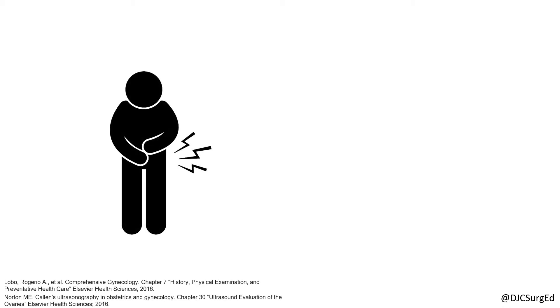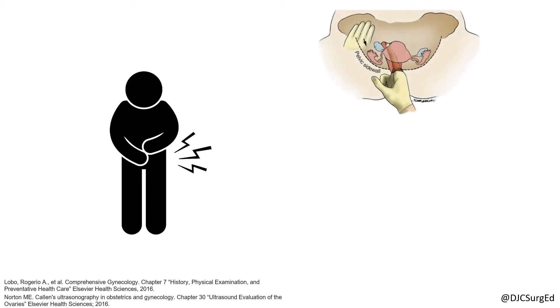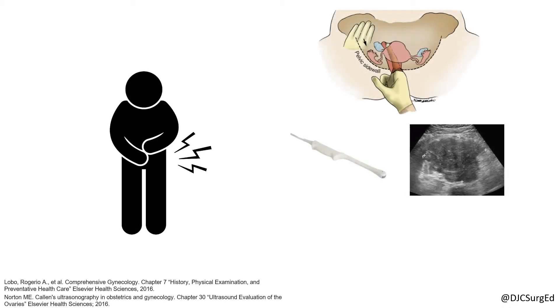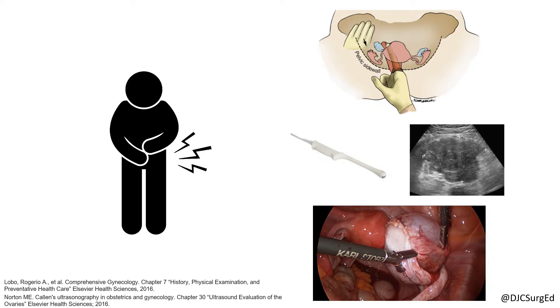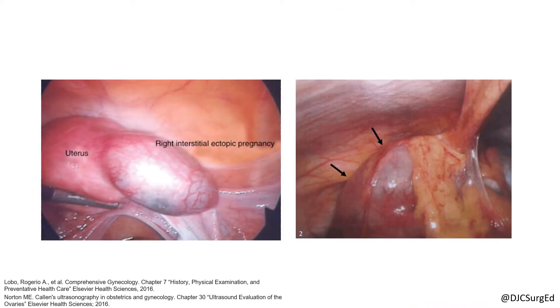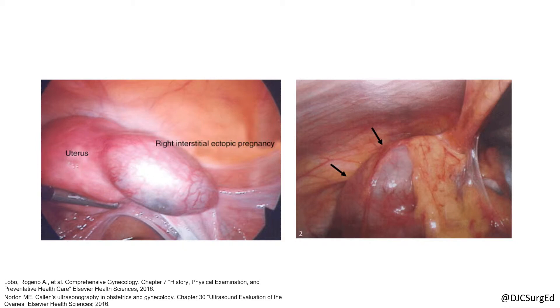Adnexal masses can be symptomatic or found incidentally on exam, imaging, or during surgery. Differential diagnosis includes both benign and malignant ovarian tumors, functional and non-functional masses, and extra-ovarian pathology such as an ectopic pregnancy or tubo-ovarian abscess. Patients can be risk-stratified based on age,